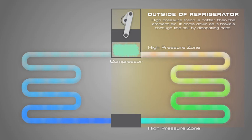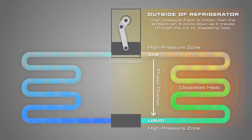Next, this high pressure, high temperature gas enters the coil on the outside of the refrigerator. Heat flows from the high temperature gas to the low temperature air of the room surrounding the coil. This heat loss causes the high pressure gas to condense to liquid as motion of the freon molecules decreases and intermolecular attractions are formed.